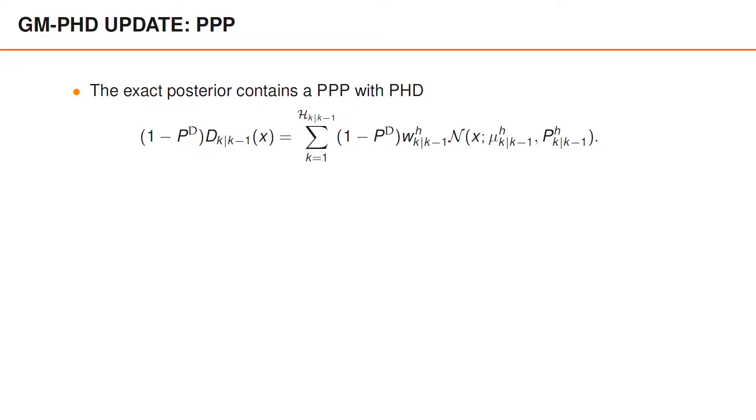Let us start by looking at the Poisson point process part of the posterior, which has an intensity function which is simply 1 minus PD times the predicted PHD. Plugging in the expression for the predicted PHD, we note that this is a Gaussian mixture where the weights have been scaled by 1 minus PD.